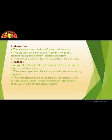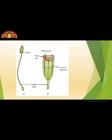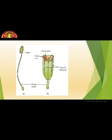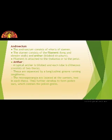What are stamens? Stamens consist of a filament — a long and slender stalk — and then the anther. You can see in the picture the anther and filament. Stamens consist of two parts: a long slender stalk called the filament, and the terminal bilobed structure called the anther.